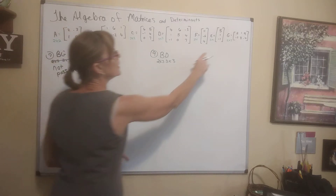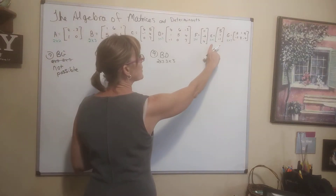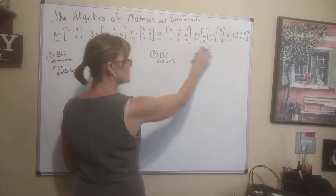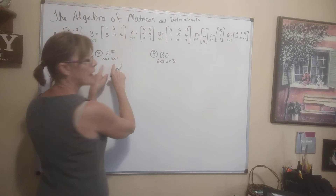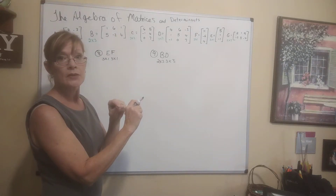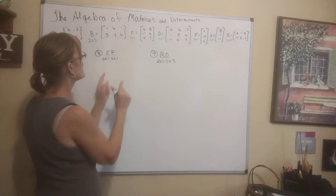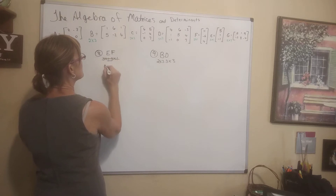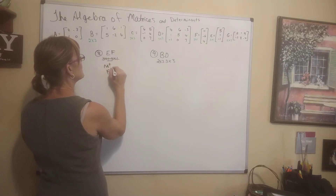E times F. E is a 3 by 1, F is a 3 by 1 — same size. We could add or subtract these together, but we cannot multiply them because the inner dimensions are not the same number. Not possible — that's what we need to write.